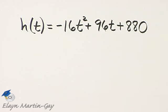Make sure you understand the meaning of this given function. Neglecting air resistance, h of t is the height of the pebble after t seconds.